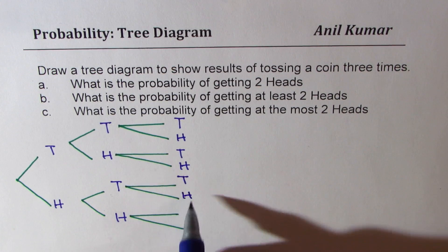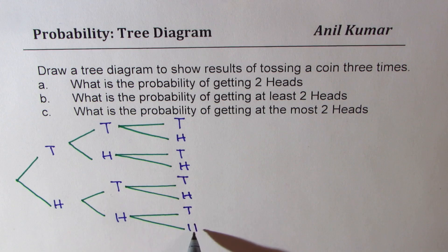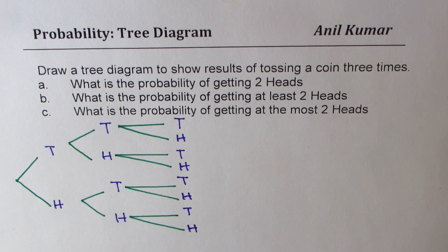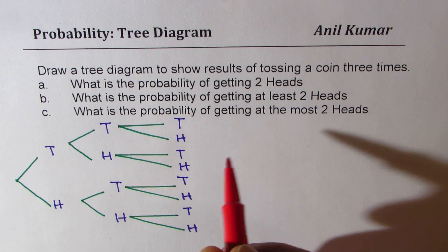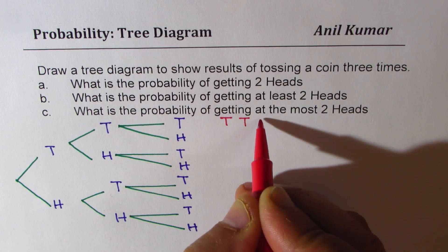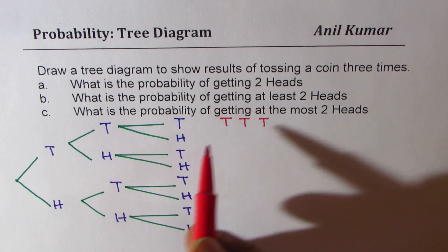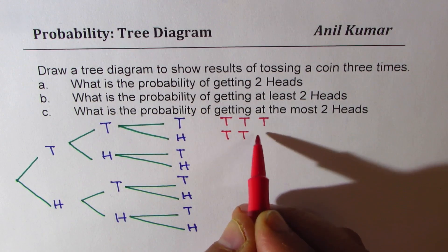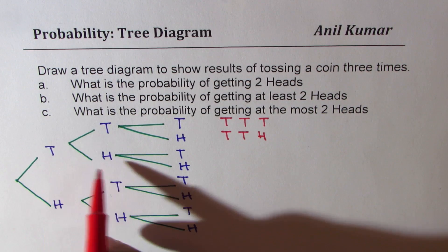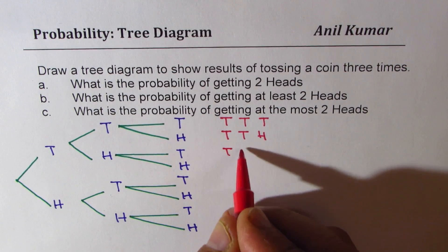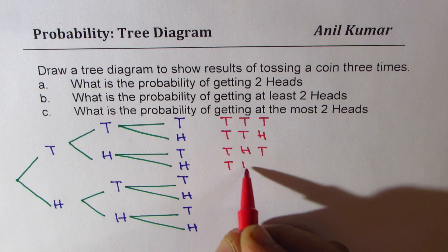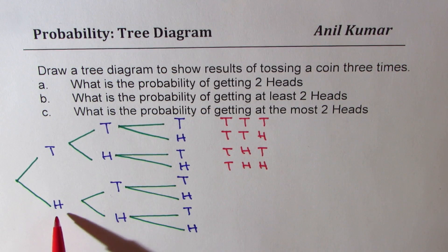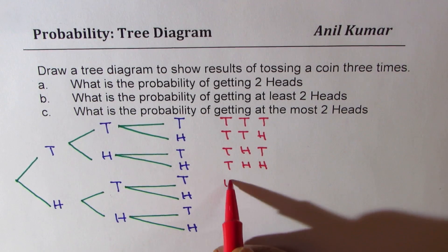We could use both these terms: equally likely and 50-50. So that becomes the scenario. Now what is the result of three tosses? If you go with the first branch we get all tails — tails, tails, and tails. Here we have the combination of tail, tail, and head. Then the next branch is tail, head, and then from tail-head we could get either tails or head.